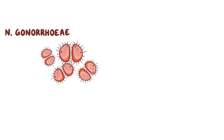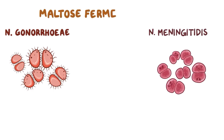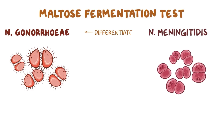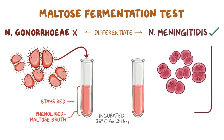However, other Neisseria species, like N. meningitidis, have the same properties, so the maltose fermentation test is done to differentiate the two. The gist of it is that N. gonorrhoeae can't ferment maltose, whereas N. meningitidis can. To check for this, a pure sample from the culture of the suspected bacteria is transferred to a sterile tube containing phenyl red maltose broth, which is then incubated at 36 degrees Celsius for 24 hours. Since N. gonorrhoeae can't ferment maltose, the solution stays red, whereas with N. meningitidis, fermentation byproducts make the solution go yellow.